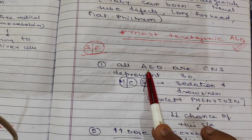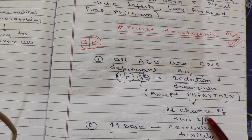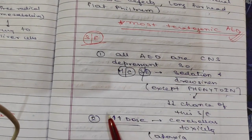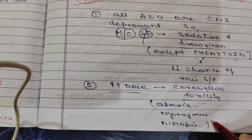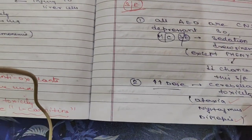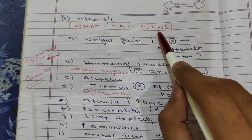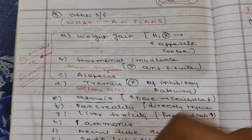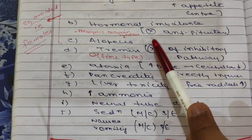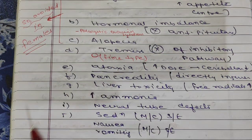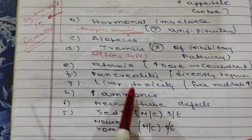All anti-epileptic drugs are CNS depressants. The most common side effect is sedation and drunkenness, except with phenytoin. With increased doses, cerebellar toxicity can occur, causing ataxia, nystagmus, and diplopia. Other side effects can be remembered with the mnemonic 'WHAT A PLAN': W for weight gain (due to H1 receptor stimulation increasing appetite), H for hormonal imbalance.